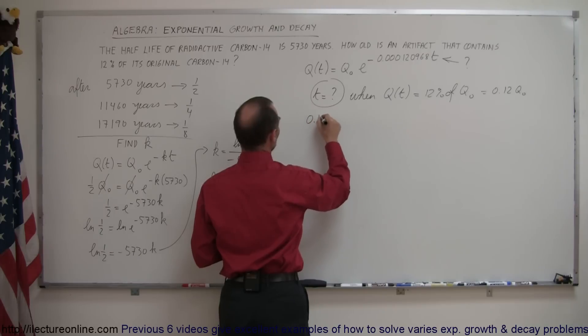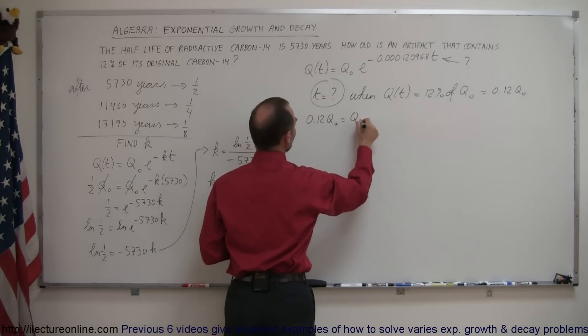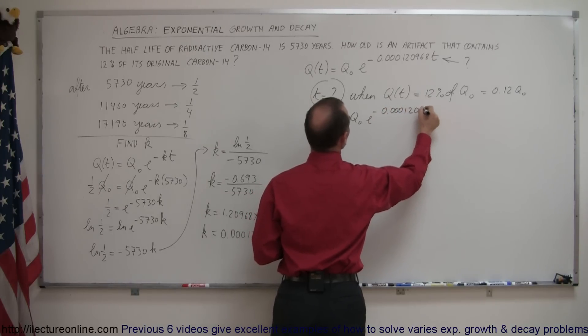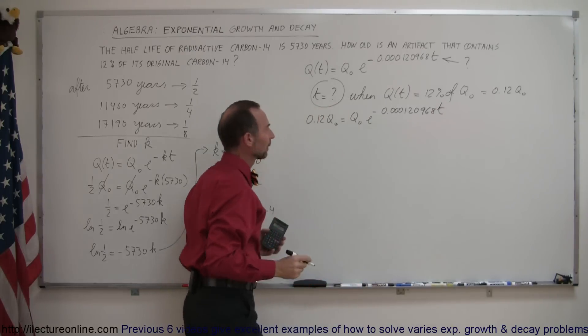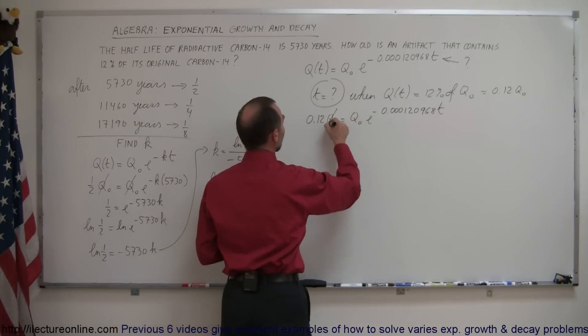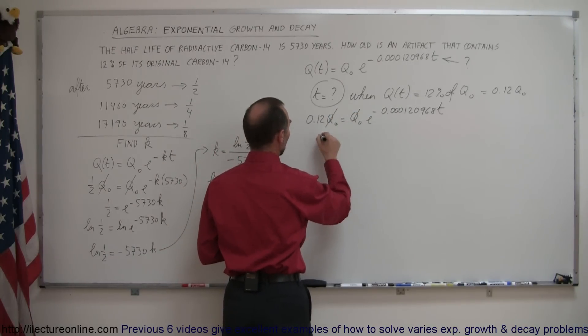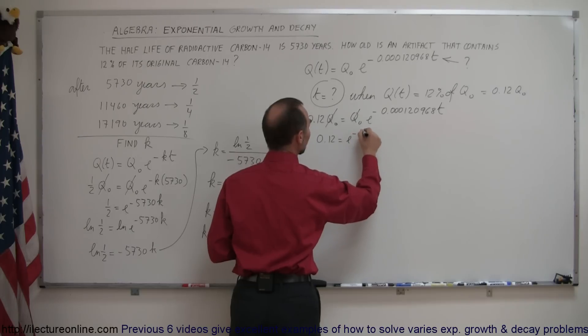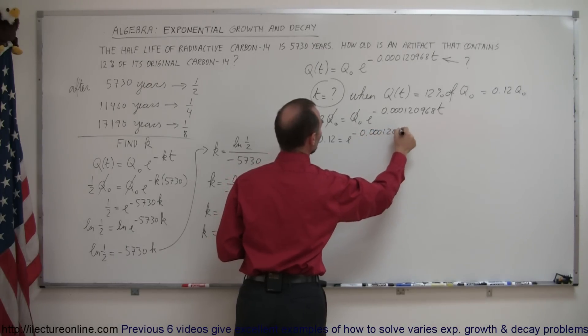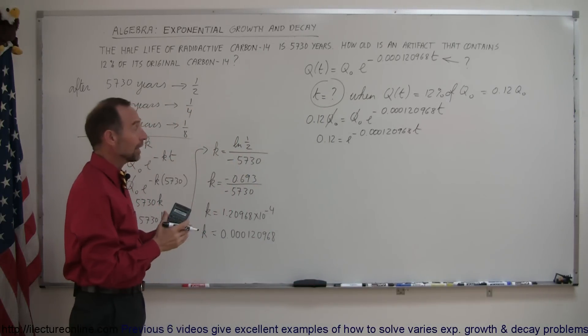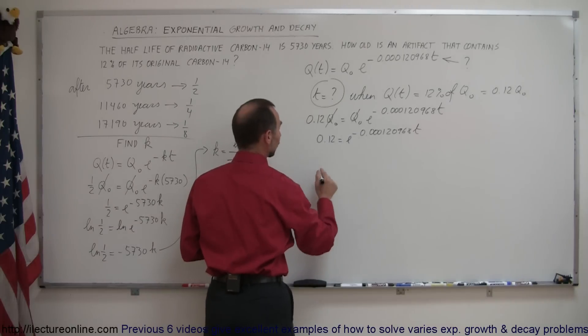So, we have 0.12 q sub nought, so that's the amount we ended up with, equals the original amount, q sub nought, times e to the minus 0.000120968 times time. We now have to solve that for time. Again, the technique is to first divide both sides by q sub nought, so now we end up with 0.12 equals e to the minus 0.000120968t. And, of course, now you're going to take the natural log of both sides to get rid of the exponential form.